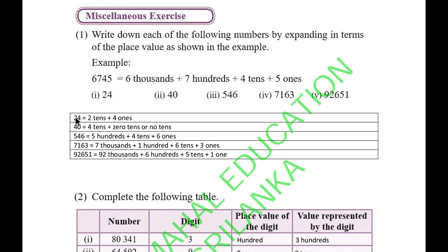24 means 2 tens plus 4 ones. 40 means 4 tens plus 0 ones, or no ones. I made a small mistake there - 40 should be 4 tens plus 0 ones.